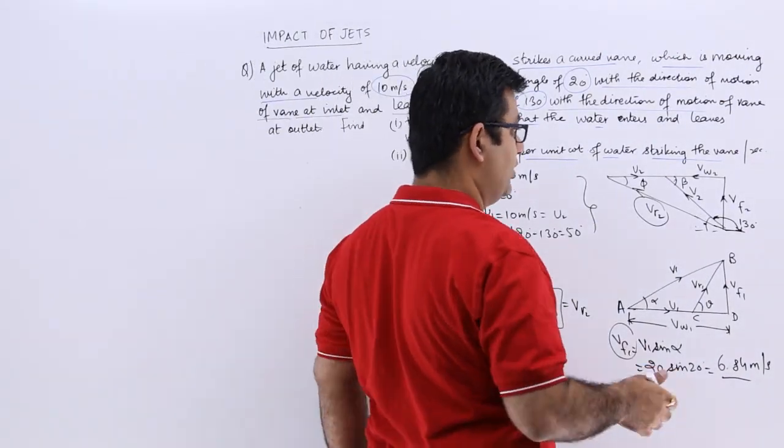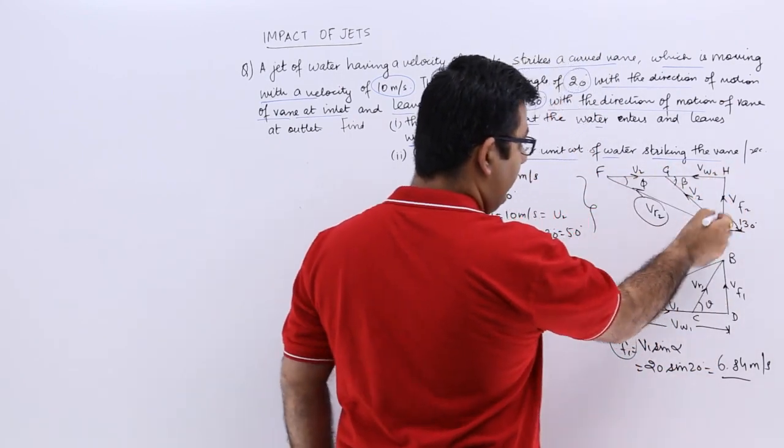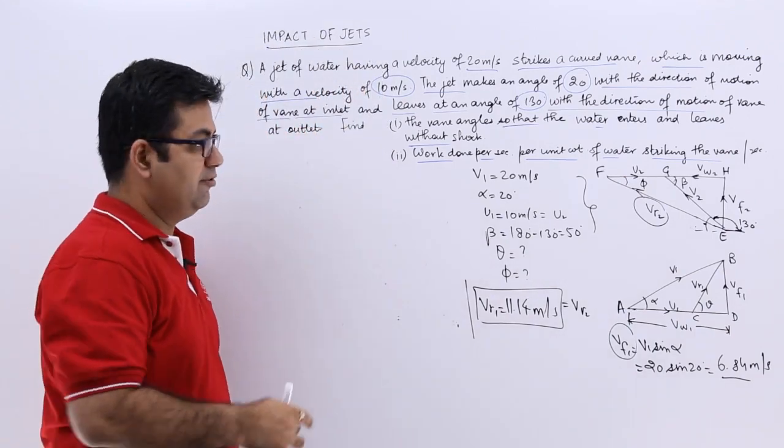Let us name this triangle. So this is E, this is F, this is G and this is H. Let me take the triangle EFG.